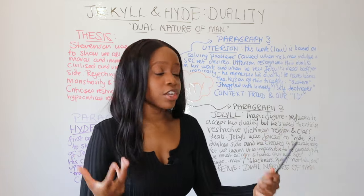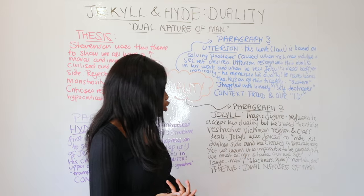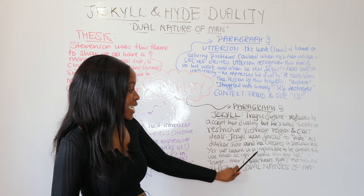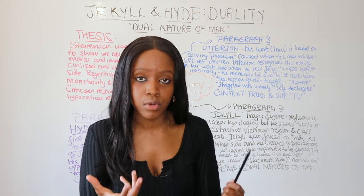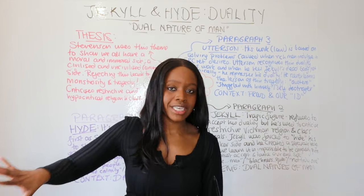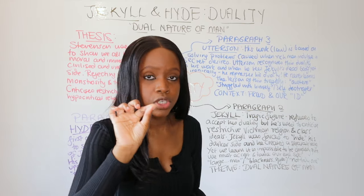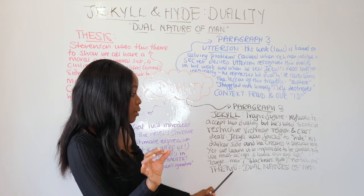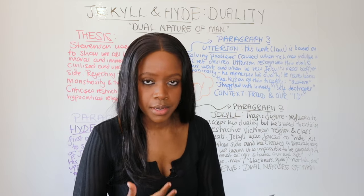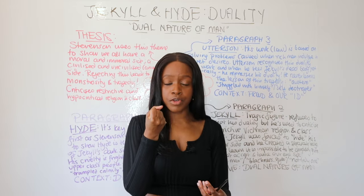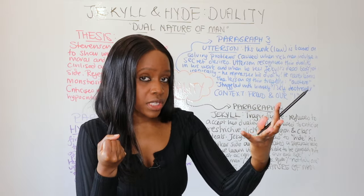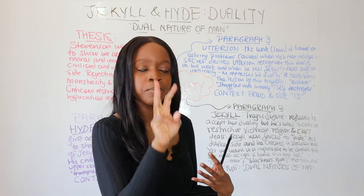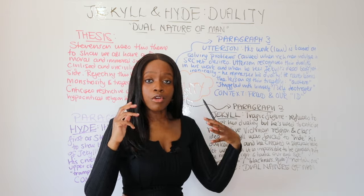At the end in chapter 10, Dr Jekyll finally accepts his duality but does so too late, acknowledging that 'man is not truly one but truly two.' Stevenson's message is that what we need to do is accept and tame this evil side within us rather than reject it or try to separate it the way Jekyll did. Stevenson uses this theme not only to criticize restrictive Victorian ideals but also to demonstrate the importance of taming and accepting this dark nature within us.